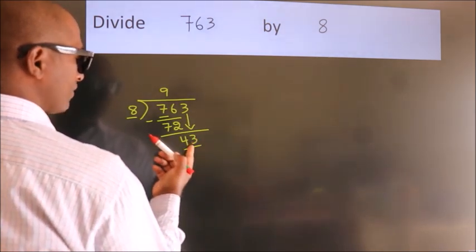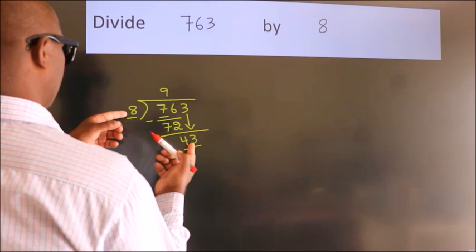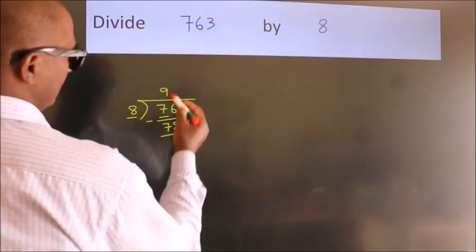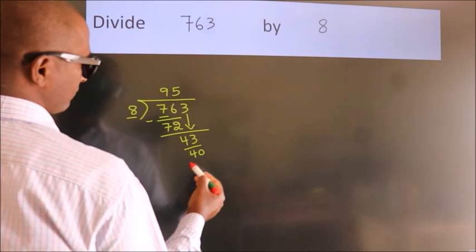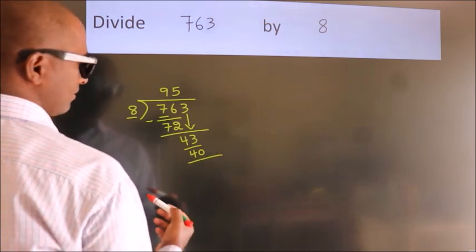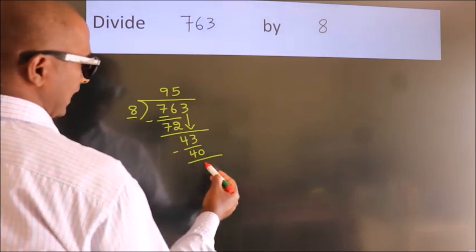A number close to 43 in the 8 table is 8 fives 40. Now, we subtract. We get 3.